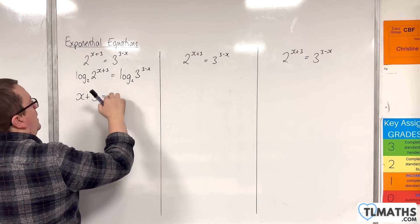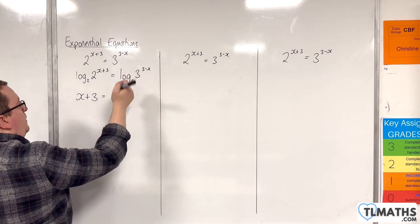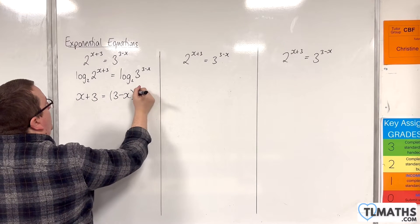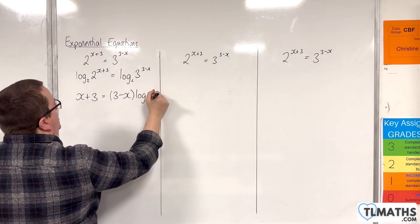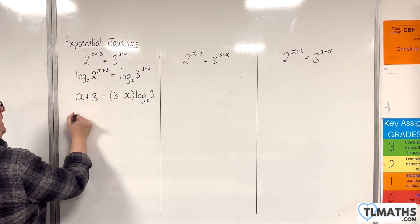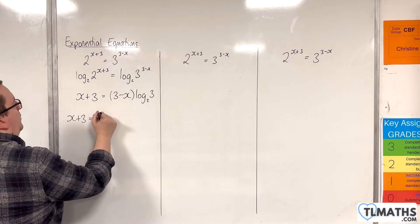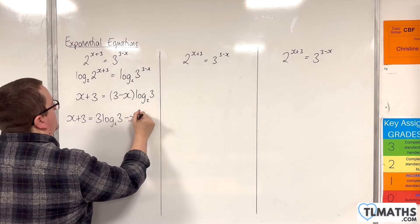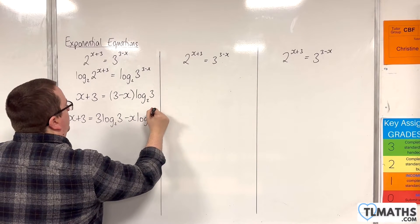And we have, here, we can bring the 3 take away x down to the front using the power rule. So, 3 take away x times log base 2 of 3. We then want to expand this out. So, we'll have x plus 3 is 3 log base 2 of 3, take away x log base 2 of 3.